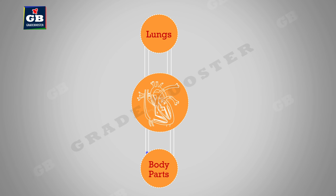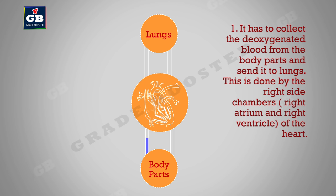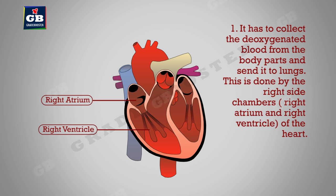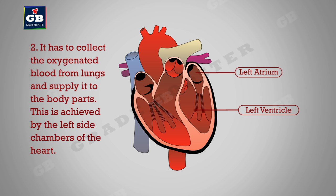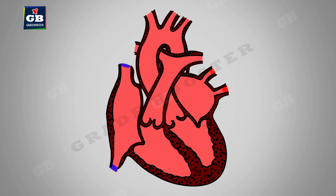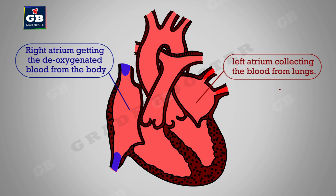The heart's first job is to collect deoxygenated blood from the body parts and send it to the lungs — done by the right-side chambers: right atrium and right ventricle. Its second job is to collect oxygenated blood from the lungs and supply it to the body parts — achieved by the left-side chambers. But it does both jobs simultaneously.